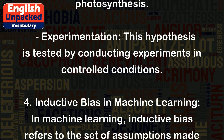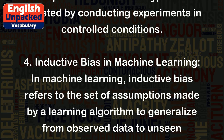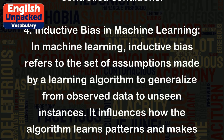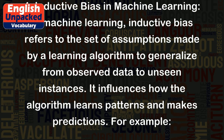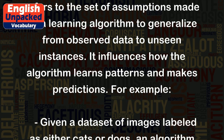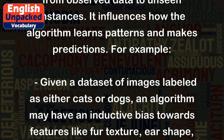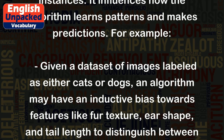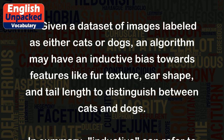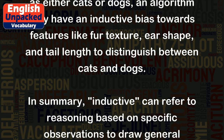4. Inductive bias in machine learning: In machine learning, inductive bias refers to the set of assumptions made by a learning algorithm to generalize from observed data to unseen instances. It influences how the algorithm learns patterns and makes predictions. For example, given a dataset of images labeled as either cats or dogs, an algorithm may have an inductive bias towards features like fur texture, ear shape, and tail length to distinguish between cats and dogs.